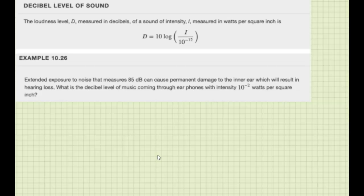So a loudness level D, measured in decibels, of a sound intensity I, measured in watts per square inch, is given by this formula. So basically, the decibel level depends on the sound intensity with this formula.